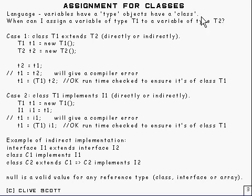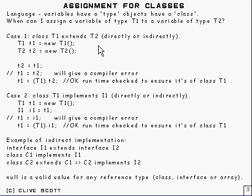The first question to sort out is: when can I assign a variable of type T1 to a variable of type T2? Here's case number 1: class T1 extends class T2, either directly or indirectly. By indirectly I mean like class A extends class B, and class B extends class C, and class C extends class D — so A would indirectly extend D.